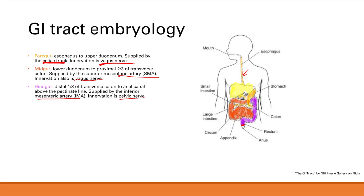You need to know which part applies in specific cases. For example, if you're at the transverse colon and it's the first one-third of it, the origin is from the midgut, with blood supply from the superior mesenteric artery and innervation from the vagus nerve. Understand distinctions like that — this is very important.